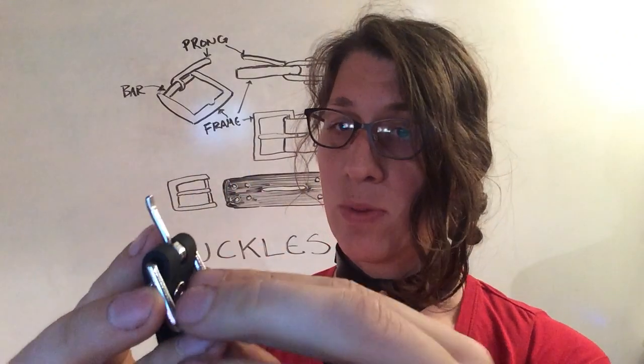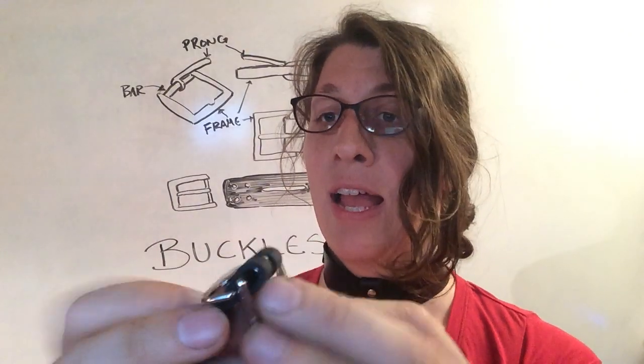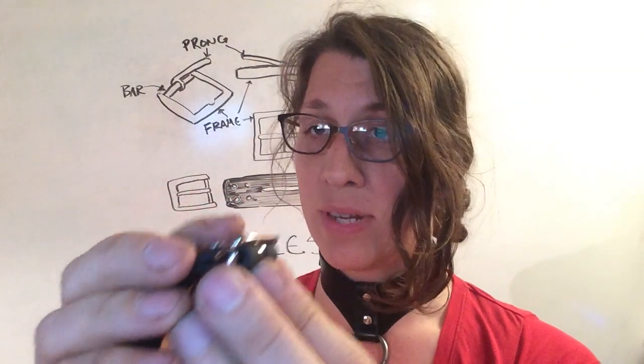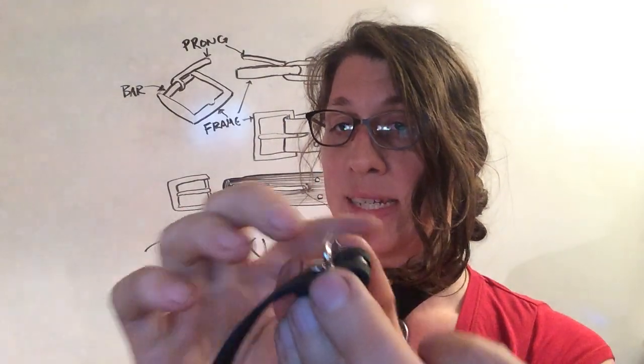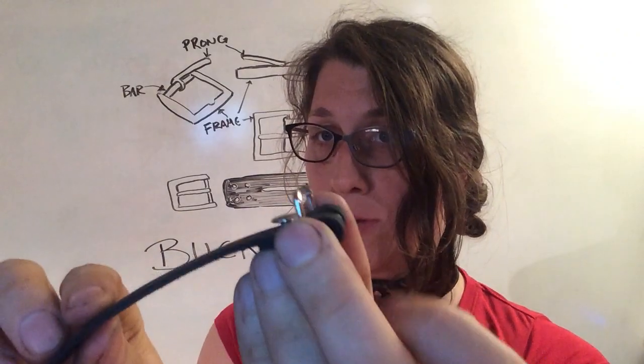This piece is the prong. That's what slides through the leather and goes through the holes to hold everything together, and then this secondary component is called the keeper, and what it will do is it will allow your leather strap, when it goes through, to lay flush on your material.